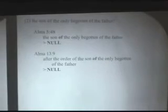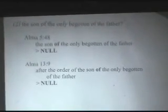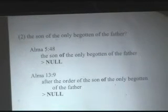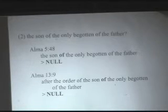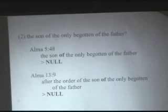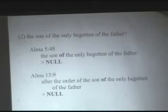The next one is probably a scribal error: 'the son of the only begotten of the Father.' One could try to argue this means Jesus had offspring, but it's probably a scribal error. It occurs in the printer's manuscript — we don't have the original manuscript — in the hand of scribe two. The scribe, hearing a lot of 'ofs,' apparently put in too many, adding an extra one: 'after the order of the son of the only begotten of the Father.' Joseph Smith removed the extra 'ofs' in the second edition, quite correctly. These are probably just simple scribal errors.